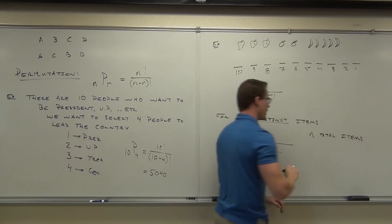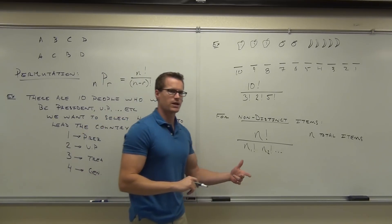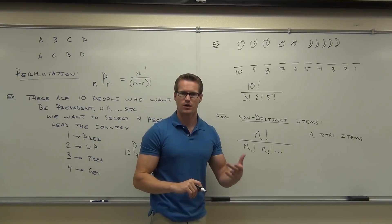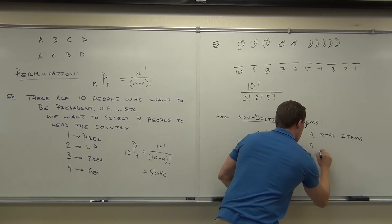So n total items, n1, n2, n3, and so on, are numbers of non-distinct items.